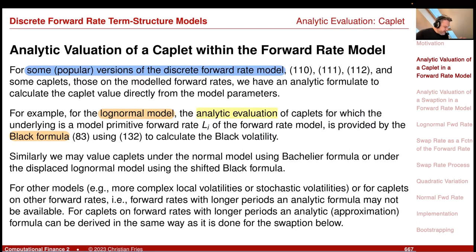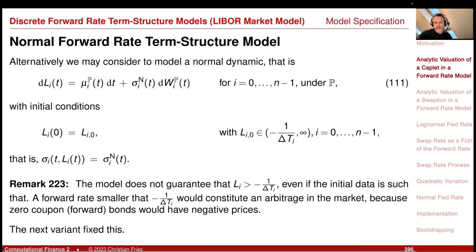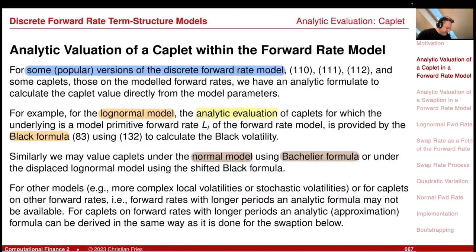You can do the same for the Bachelier model using the Bachelier formula for the normal model ('111'): integrate sigma_i^n squared over time, divide by time, take the square root, and plug into the Bachelier formula. You can also do the same for the displaced log-normal model using a shifted Black formula.